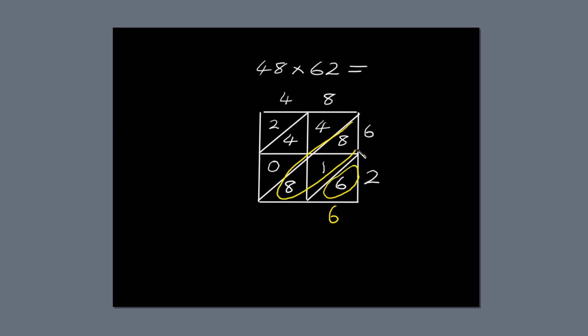The next diagonal has three numbers: 8, 1, and 8. 8 plus 1 is 9, plus 8 is 17. Write the 7 below the diagonal, and carry the 1 across to the next diagonal.